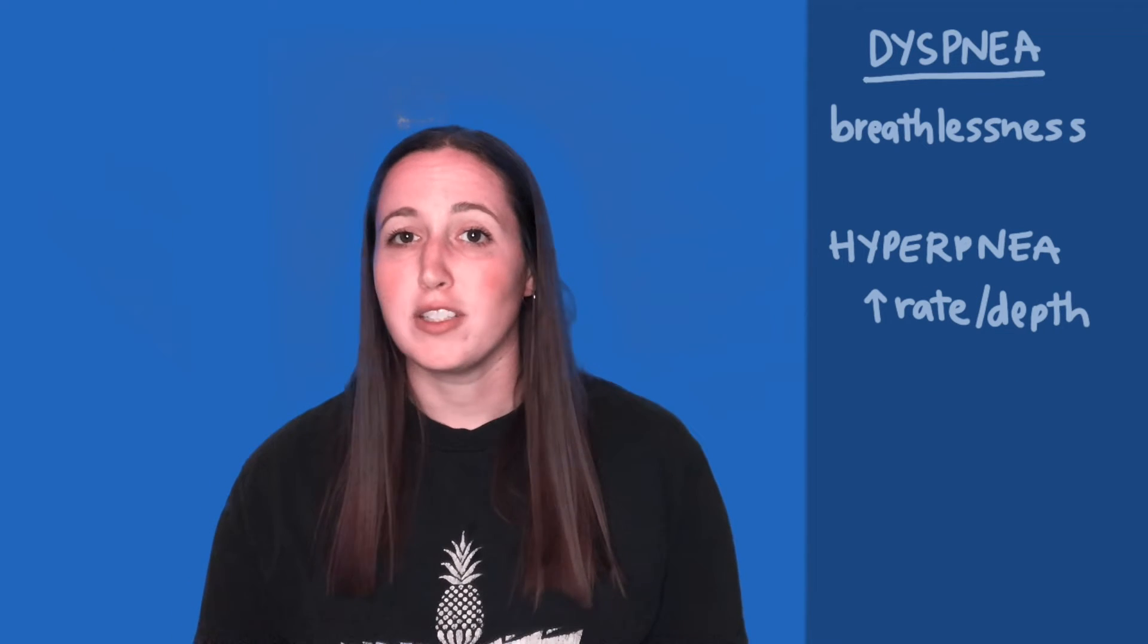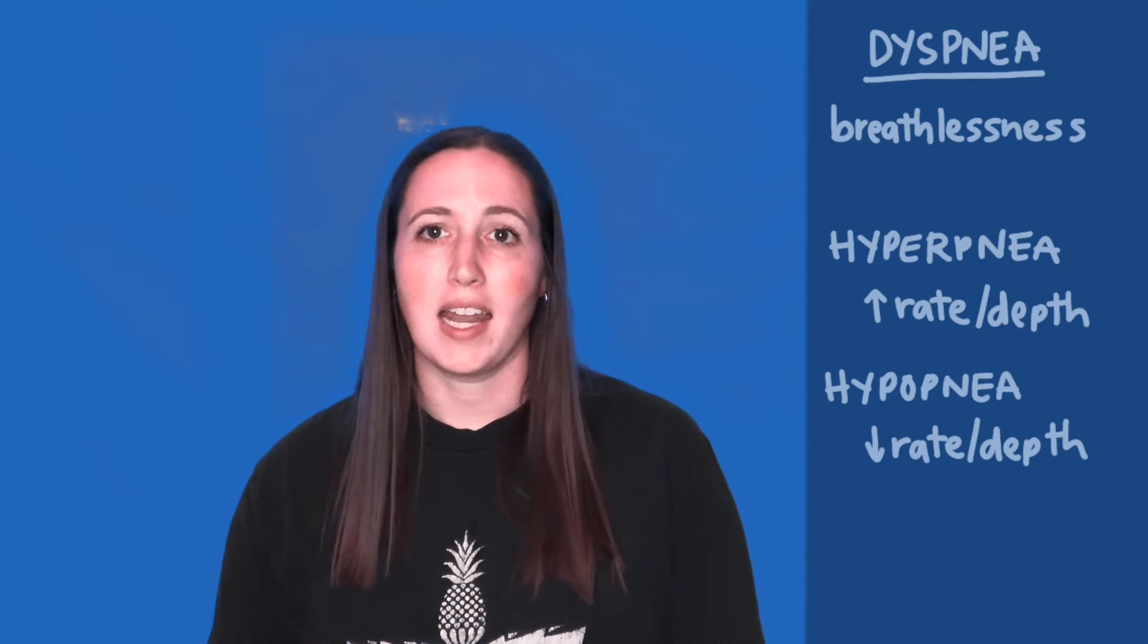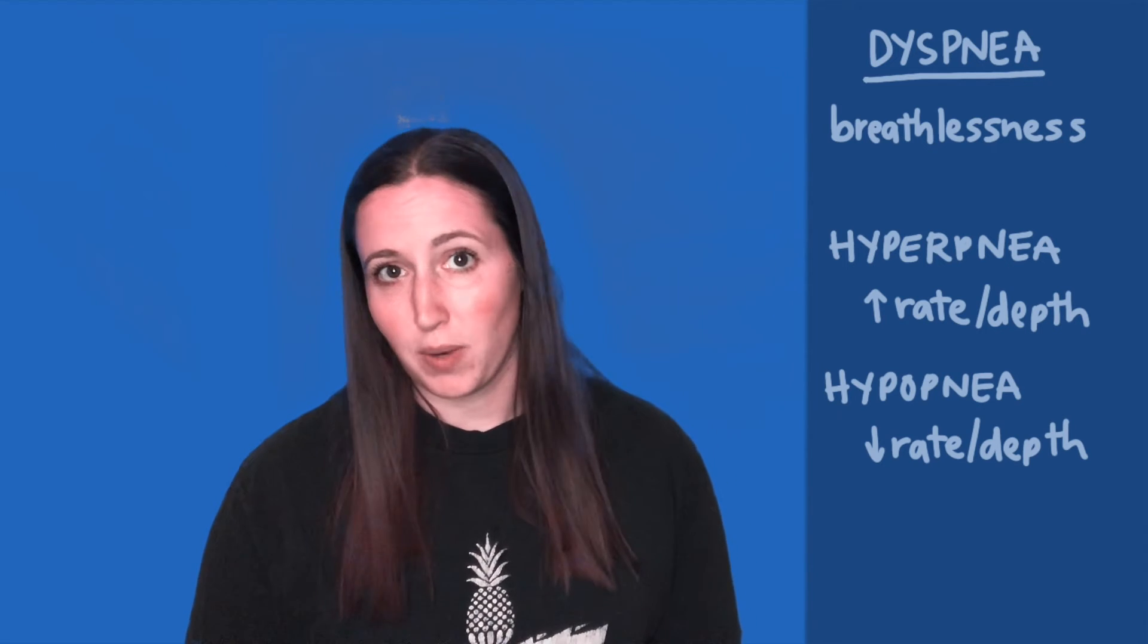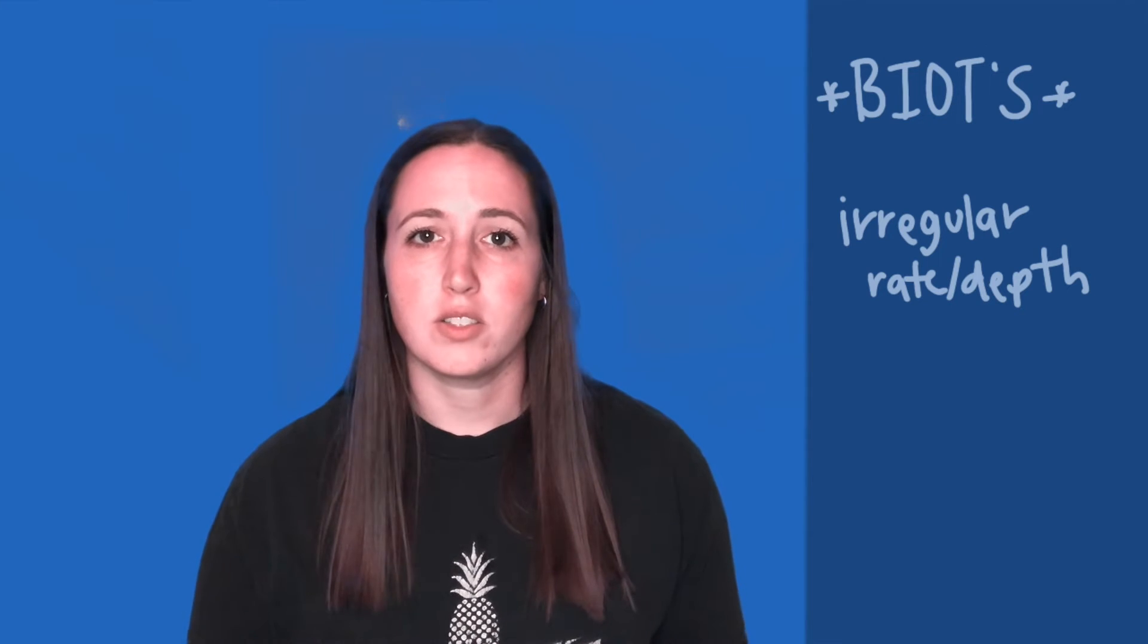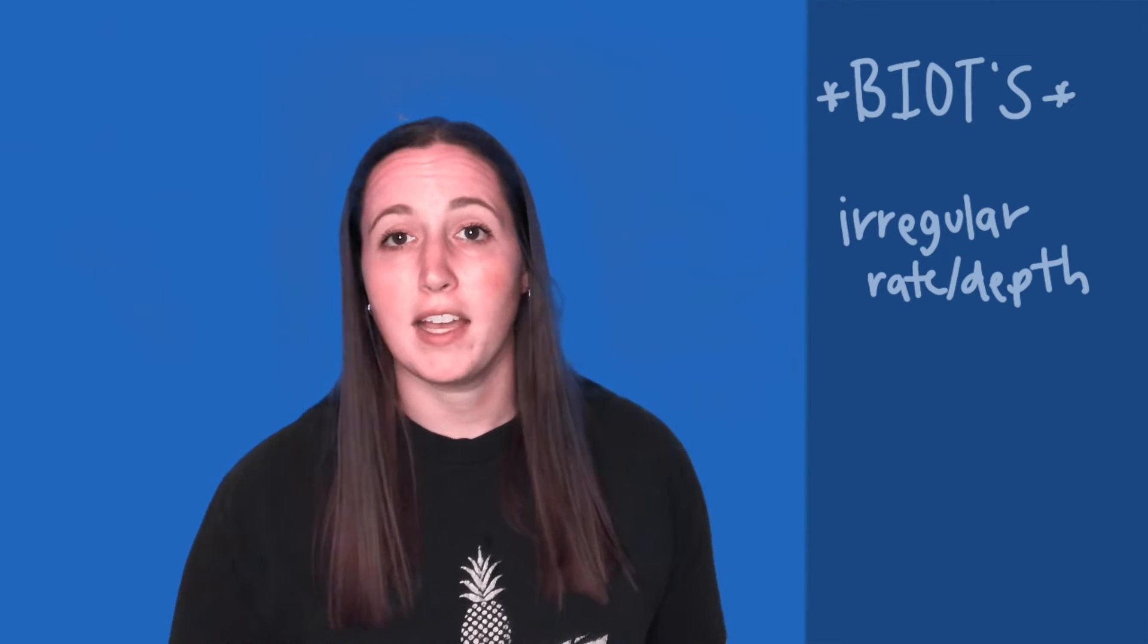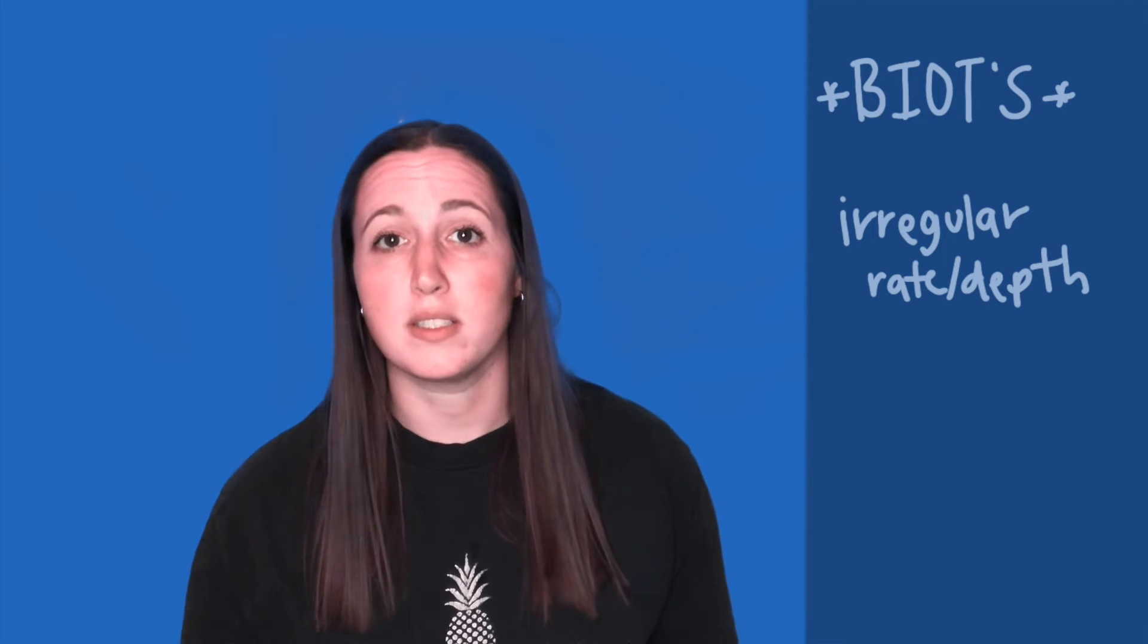Hyperpnea is an increased rate and depth of breathing, and hypopnea is a decreased rate and depth of breathing. Ataxic breathing is an irregular depth and rate of breathing. This is usually seen in people with a very high intracranial pressure or medulla damage.